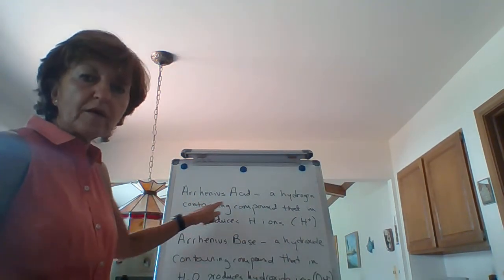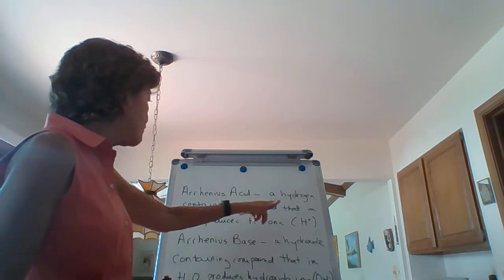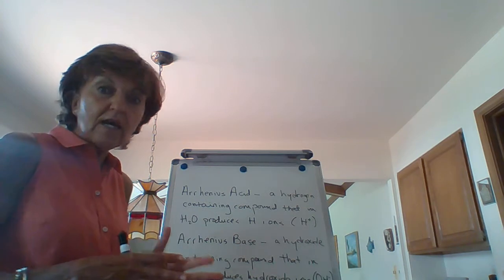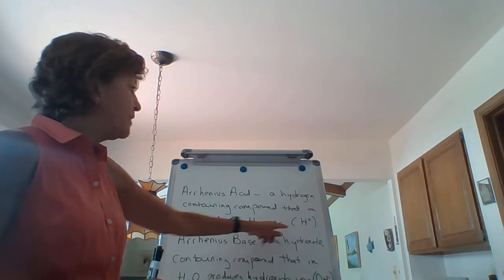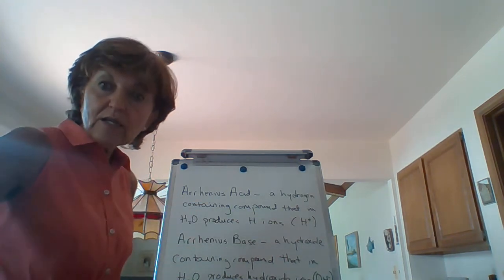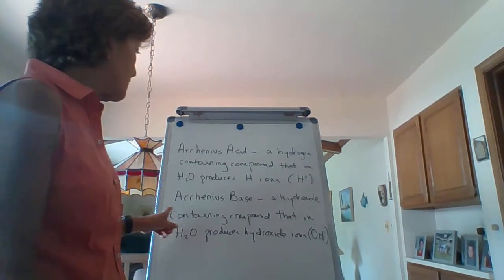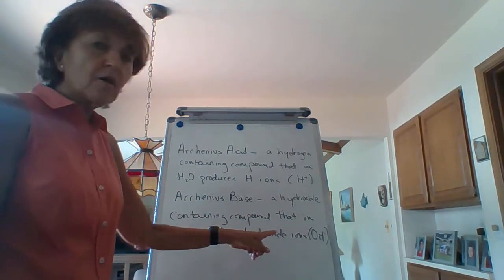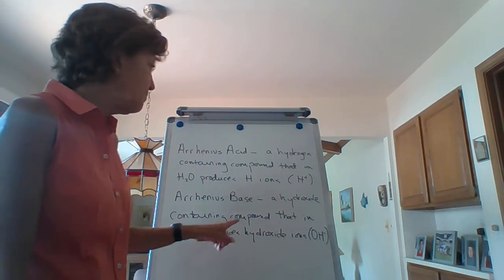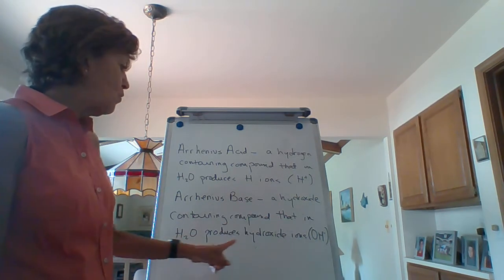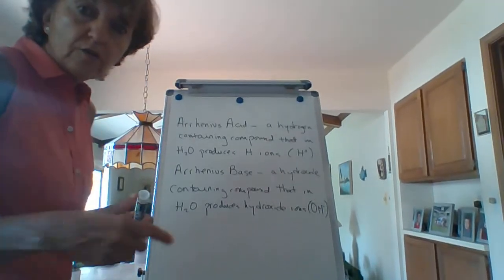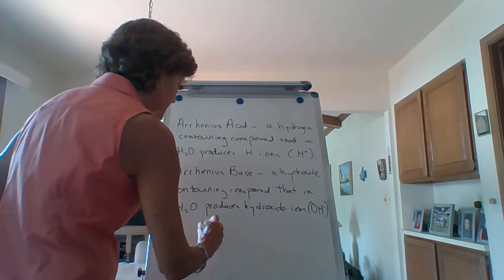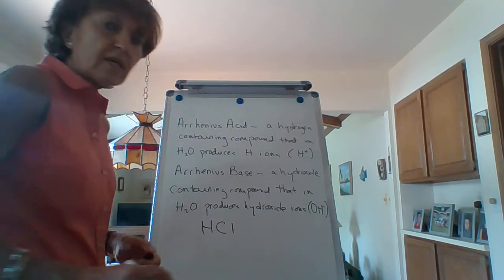So what is the Arrhenius definition? This is how you spell Arrhenius, by the way. An Arrhenius acid is a hydrogen-containing compound — so it has to contain a hydrogen — that in water produces hydrogen ions. A hydrogen ion is H+. And an Arrhenius base is a hydroxide-containing compound. Remember the polyatomic ion hydroxide. A hydroxide-containing compound that in water produces hydroxide ions. So an example of an acid according to the Arrhenius definition would be HCl — hydrochloric acid.